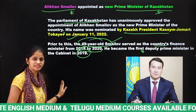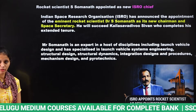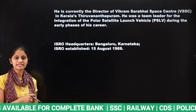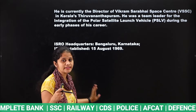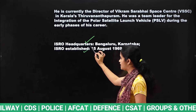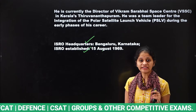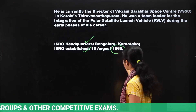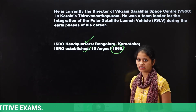Now we will look at new appointments related to ISRO. First, the static GK: ISRO stands for Indian Space Research Organisation. It was established in 1969 on 15th August, and its headquarters is in Bengaluru, Karnataka. This is the static GK you need to know before understanding why ISRO is in current affairs today.